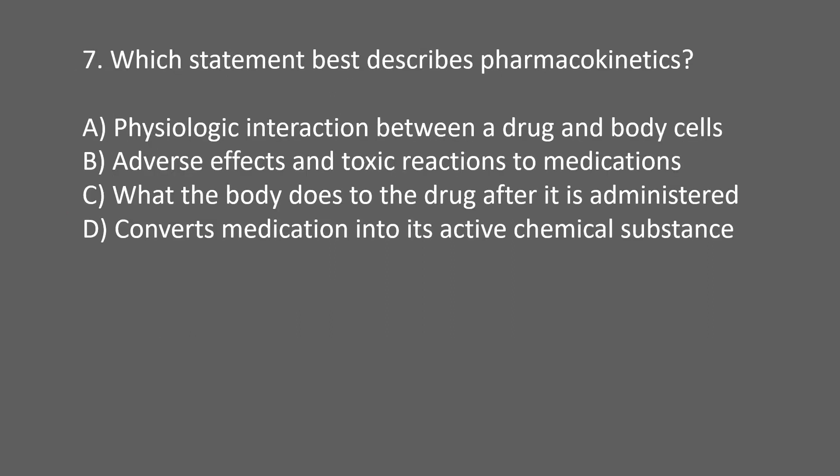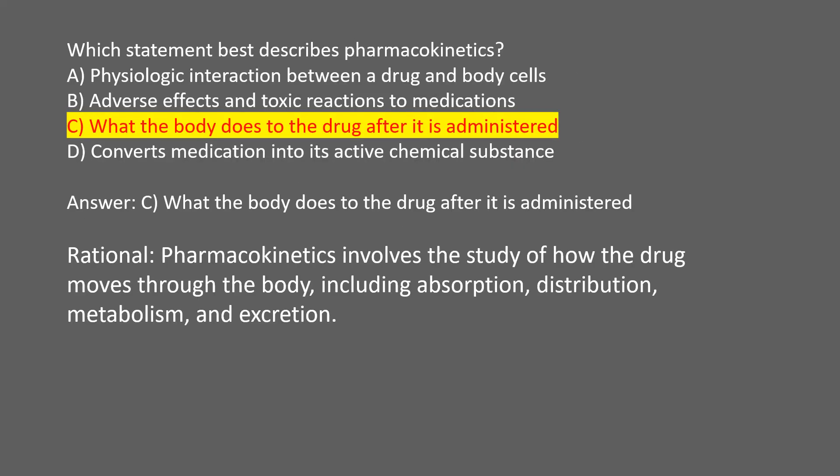Which statement best describes pharmacokinetics? A. A physiologic interaction between a drug and body cells. B. Adverse effects and toxic reactions to medication. C. What the body does to the drug after it is administered. D. Converts medication into its active chemical substance. Answer: C. What the body does to the drug after it is administered.